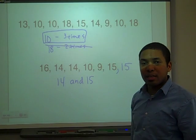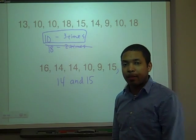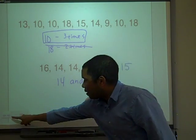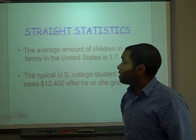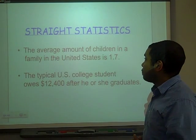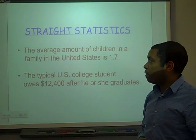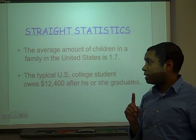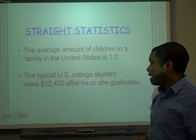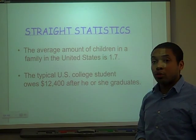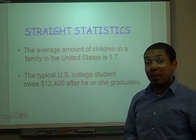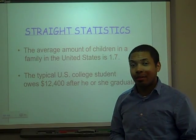The mode is 14 and 15. Hope you enjoy, and here are some statistics for you: the average number of children in a family in the United States is 1.7, and the typical US college student owes $12,400 after he or she graduates. Enjoy.